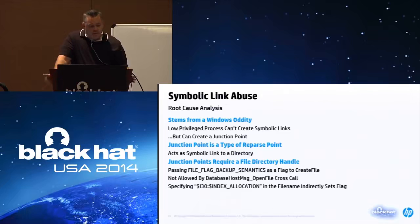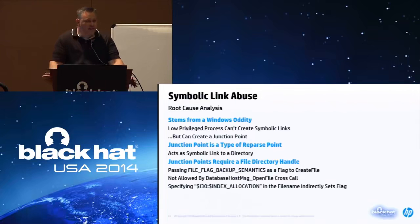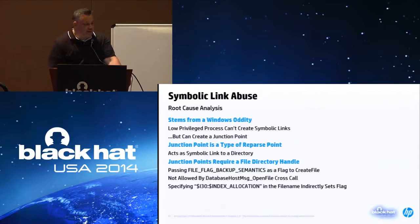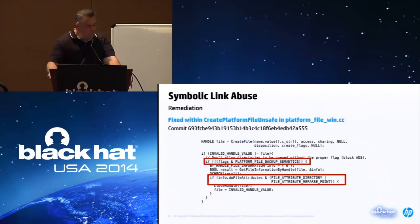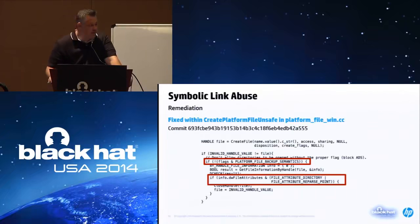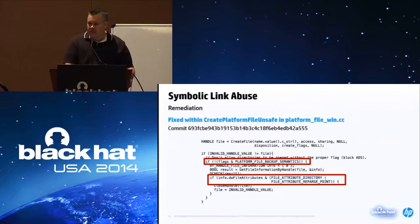What is the root cause? There is some weirdness in Windows where a low integrity process cannot create symbolic links, but they can create junction points. These junction points act like symbolic links for a directory. The junction point requires a directory handle, and in most cases you don't have access to CreateFile with FILE_FLAG_BACKUP_SEMANTICS, but you can implicitly set this through the dollar-sign I30 dollar-sign IndexAllocation trick to get access to the directory stream and create a junction point. Google Chrome fixed this by introducing checks: they check against their platform file backup semantics flag to see if a directory or reparse point was actually requested, and if not, make sure they're not passing back a directory handle or reparse point to the low integrity process.